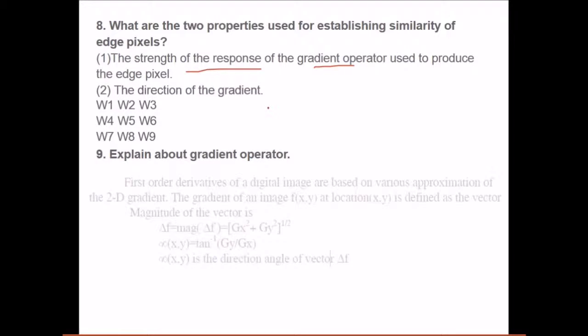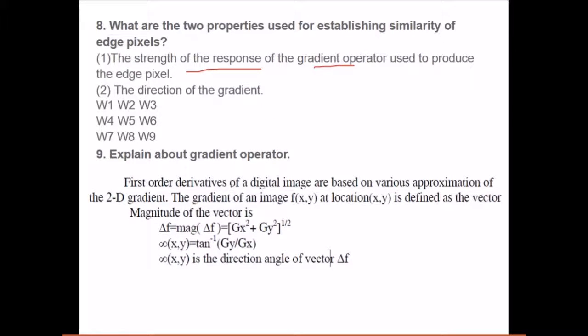Explain about gradient operator. The first order derivative of digital images is based on various approximations of the 2D gradient. The gradient of an image f(x,y) at some location xy is defined as the vector magnitude: square root of gx squared plus gy squared. The direction angle of vector delta f is tan to the power of gy by gx.